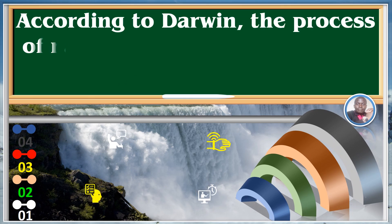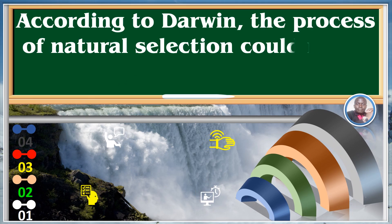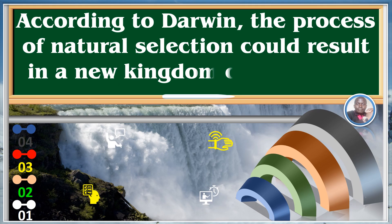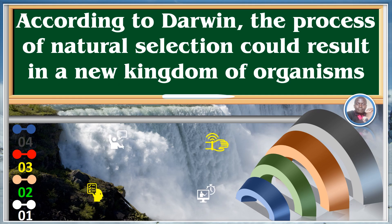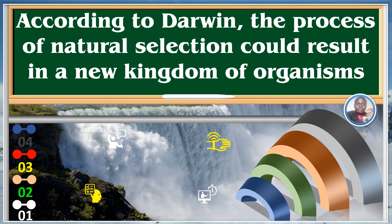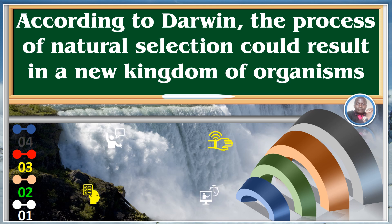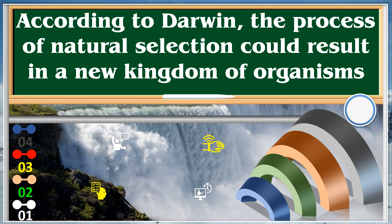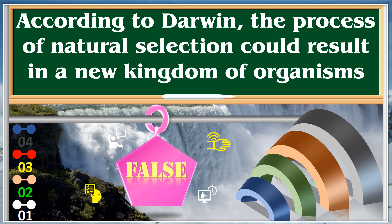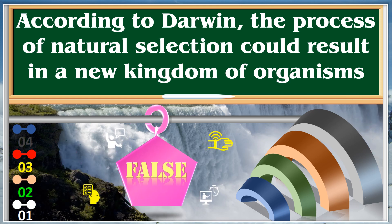According to Darwin, the process of natural selection could result in a new kingdom of organisms. False.